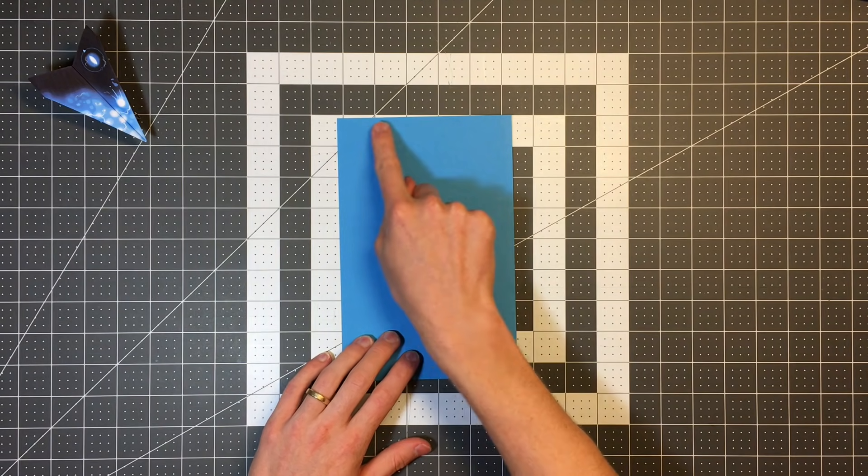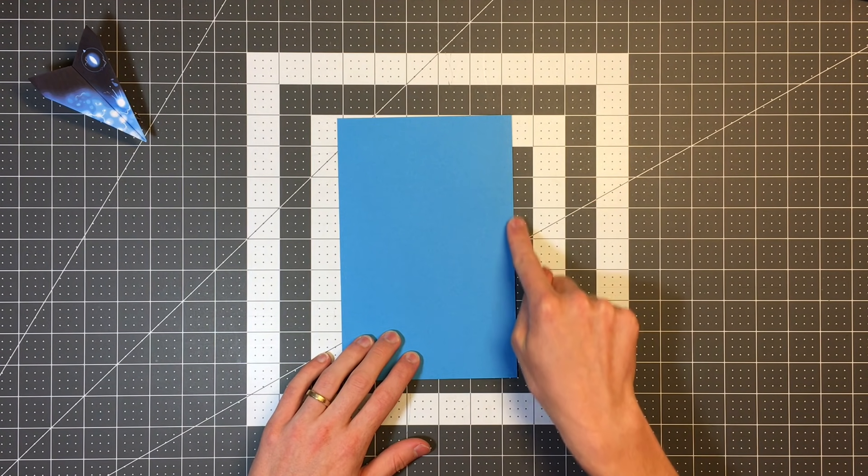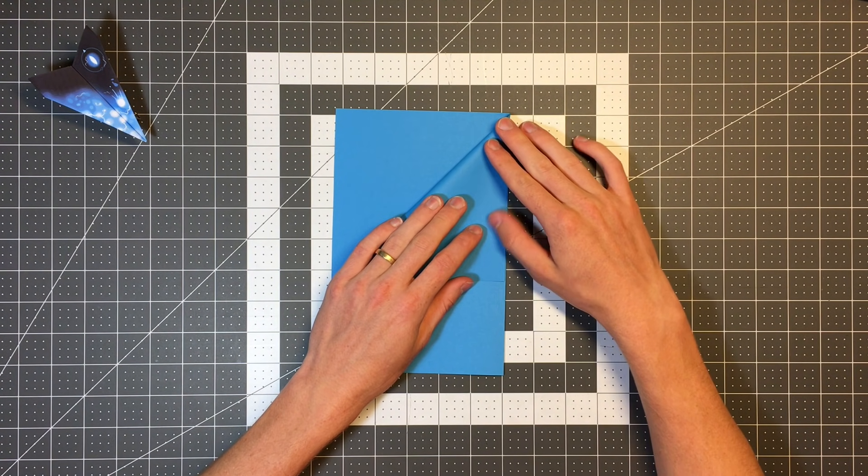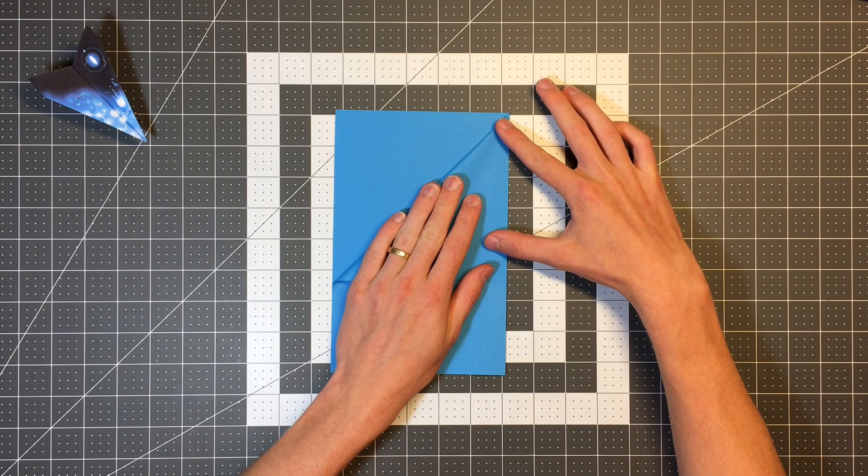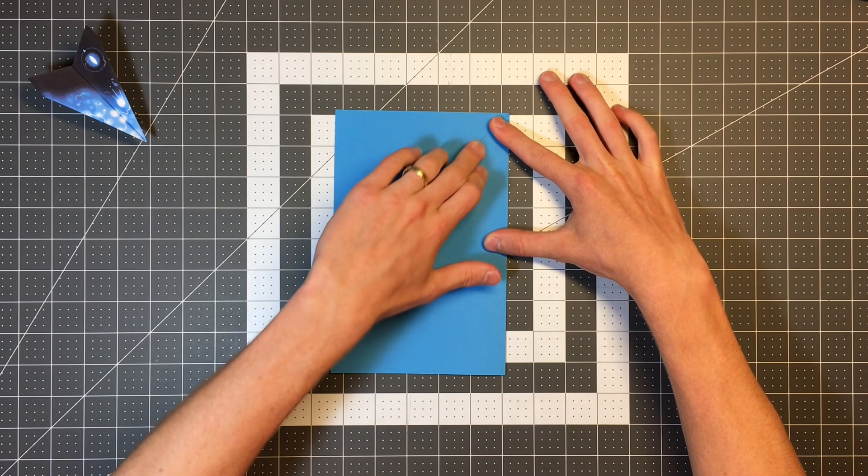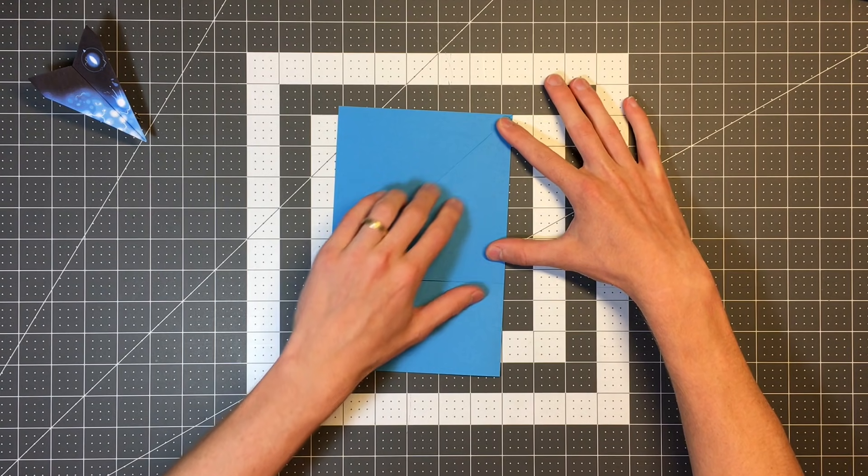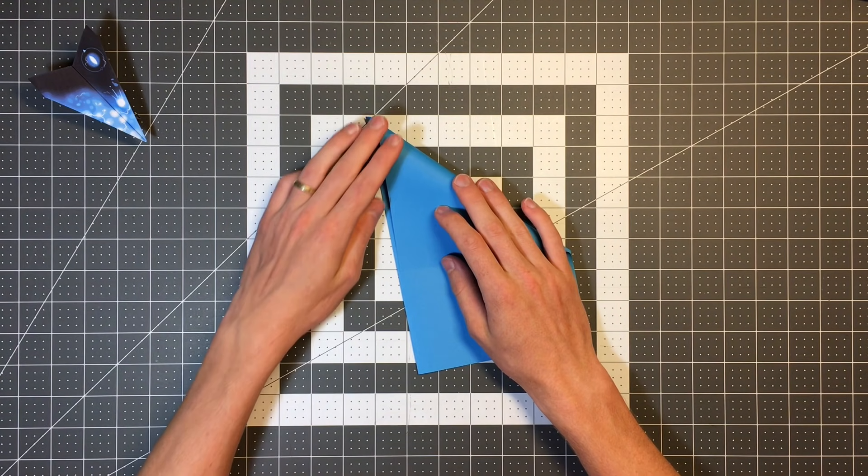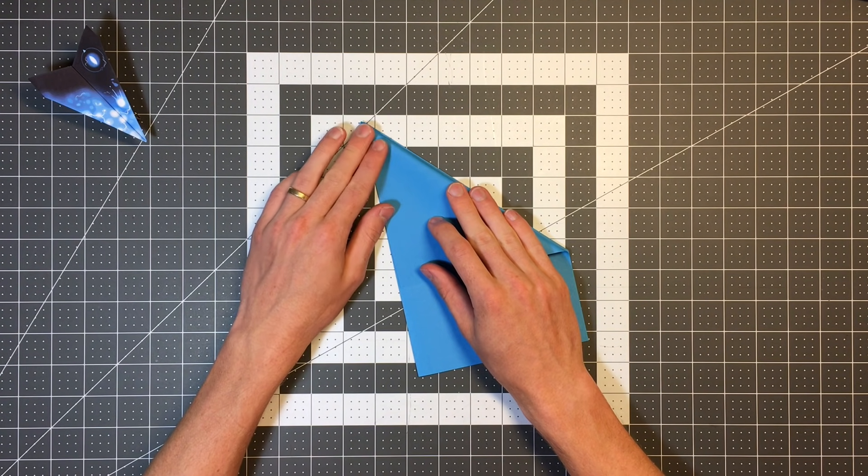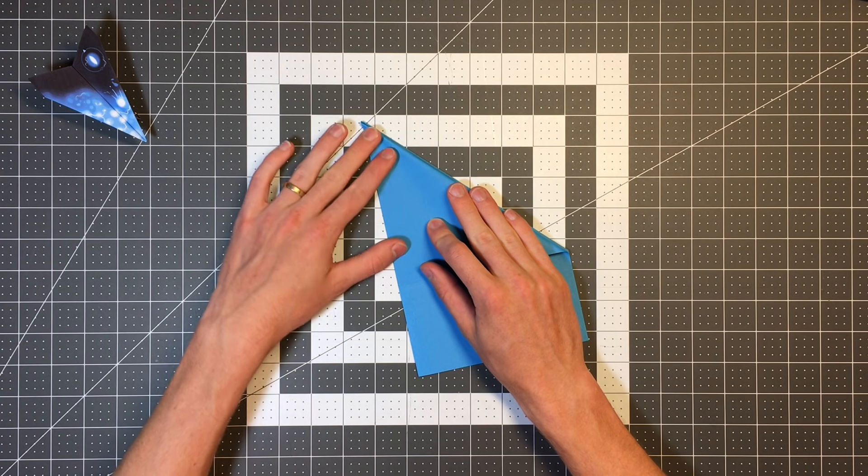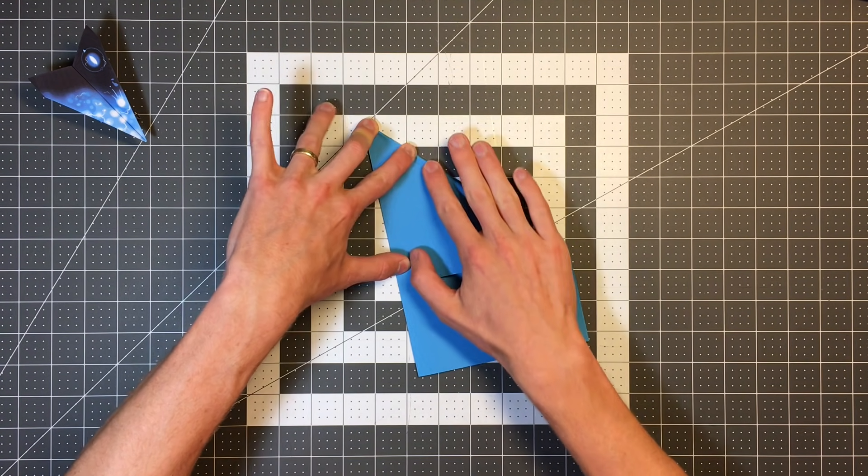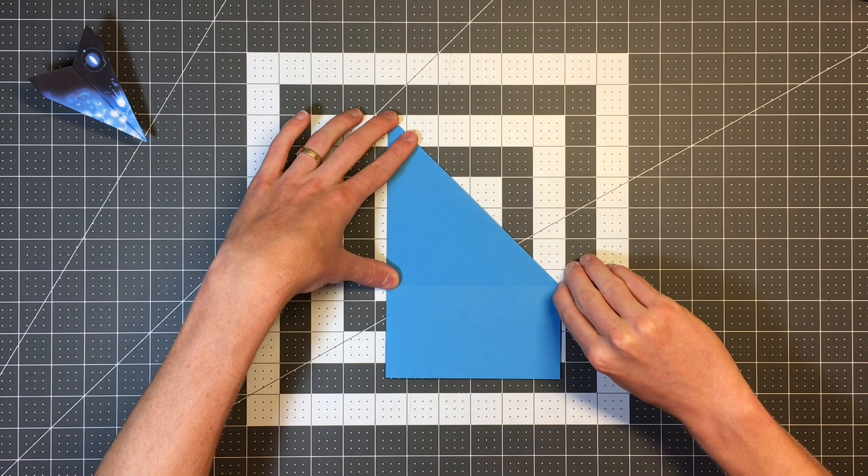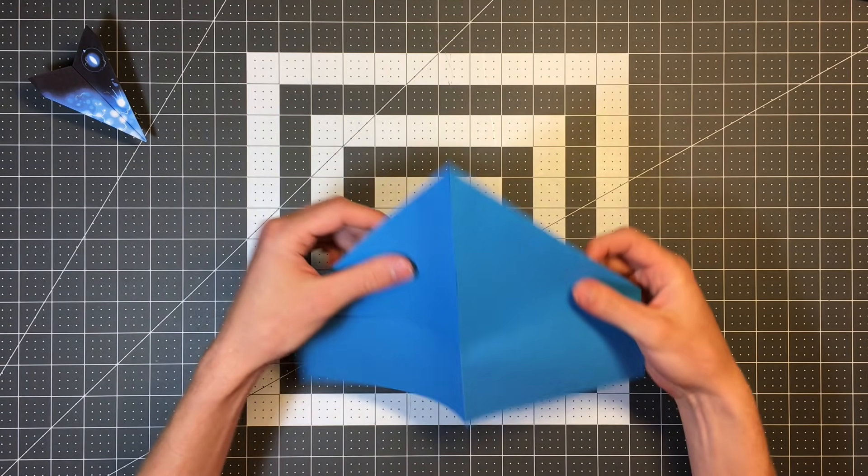Once we've done that, we're going to fold this top edge here. Here's our folded edge. We're going to take the top edge to our folded edge, which should make a little triangle. Just like so. Then I'll flip the paper over and fold the other side to match. Now we can open our paper up like this.